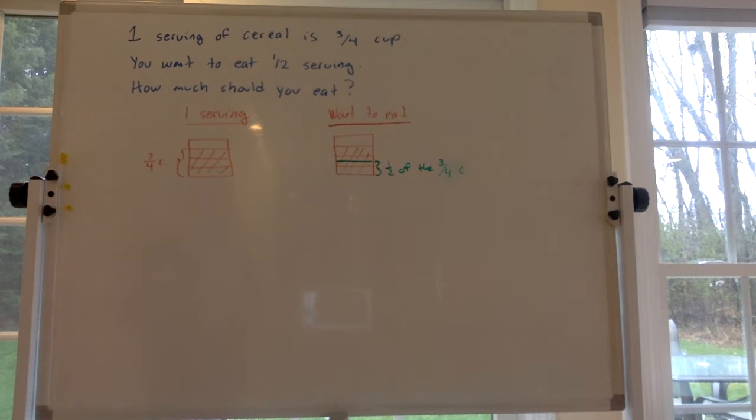Hi everybody. Here's a problem that has to do with cereal and fractions. They're telling us that one serving of cereal is three-quarters cups, but you only want to eat half of a serving. I guess you want half the calories, right? So how much should you eat? For these, the best thing to do I think is to draw pictures.